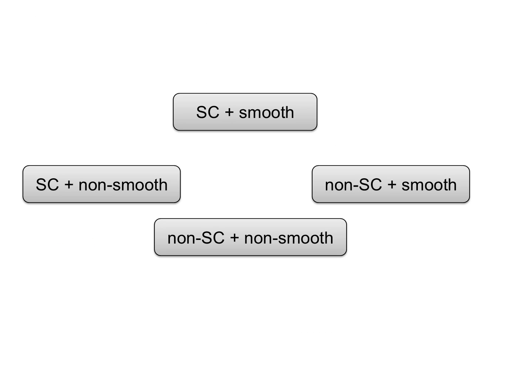For instance, can we hope to get reductions so that as long as we get algorithms for the first class, say the topmost class, we automatically get algorithms for the remaining three classes at once?